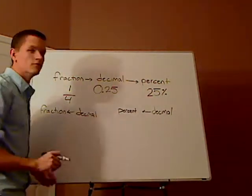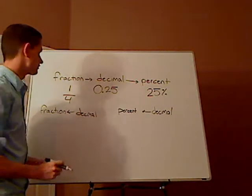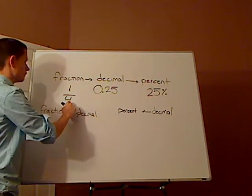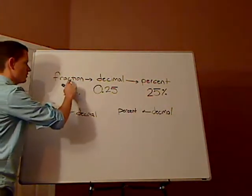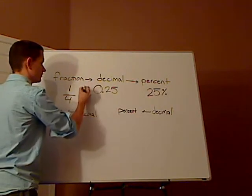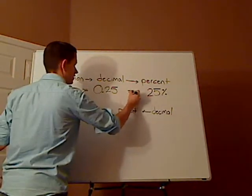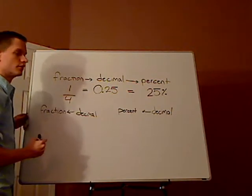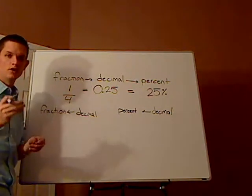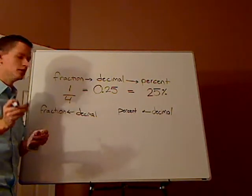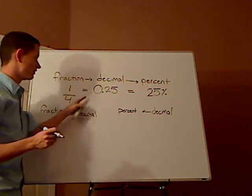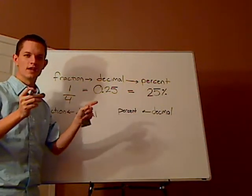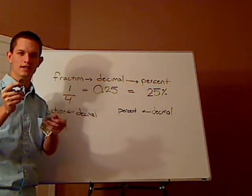All right, so a couple things that we can learn from this. One is that we can learn, a fraction, all of these are equal to each other, right? I didn't manipulate the quarter, and it went from a fourth, and now it's 25 cents by some magic. It is that.